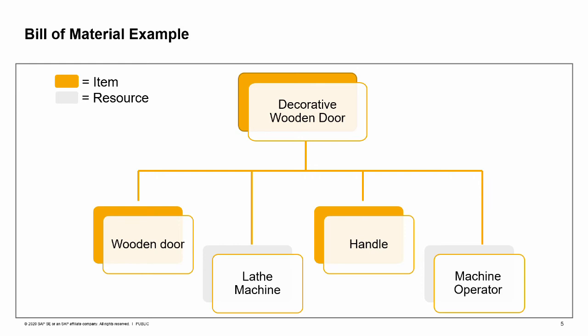In real-life production, bills of materials often have several levels. In our example, the wooden door component can also have its own bill of materials. Note that the finished products are also defined as items, master data, in the system.